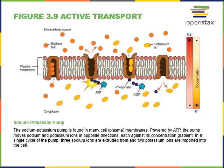The concentration gradient created by the sodium-potassium pump is used by other membrane transporters to facilitate ion movement. For example, as sodium moves down its concentration gradient through a glucose transport protein, it can bring glucose into the cell.